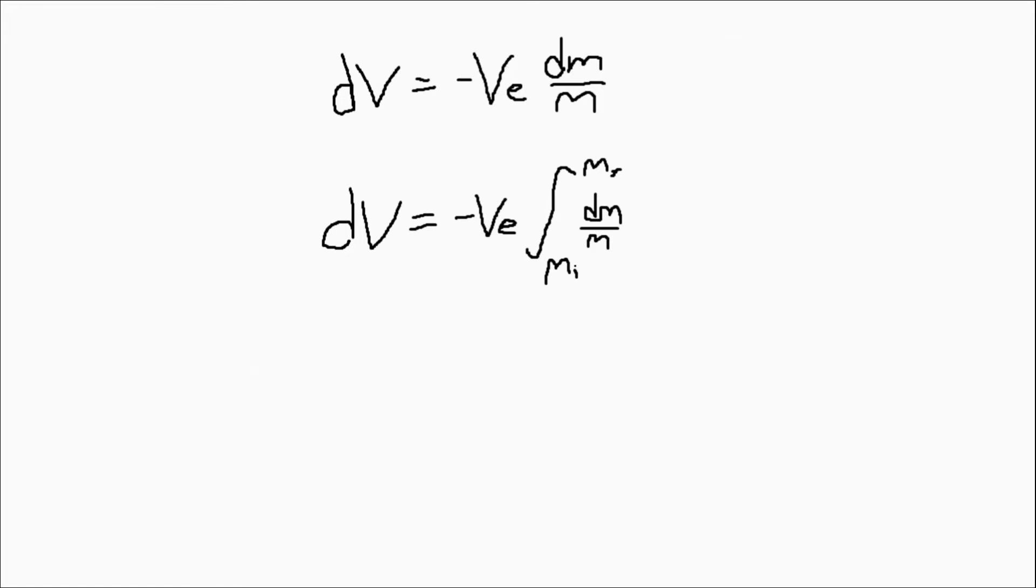Now, if you remember from earlier, I said the values for VE and delta V were constants, so when we integrate both sides of this equation, they can move outside of the staff because of the constant multiple rule. Now all we need to do is integrate change in M over M from the initial value of M to the final value of M.